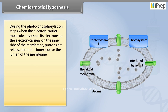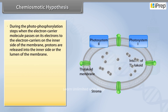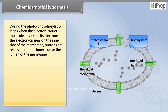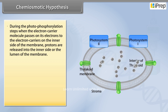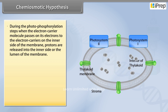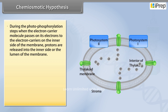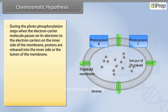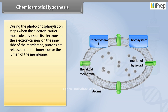During the photophosphorylation steps, when the electron carrier molecule passes on its electrons to the electron carriers on the inner side of the membrane, protons are released into the inner side, or the lumen, of the membrane.